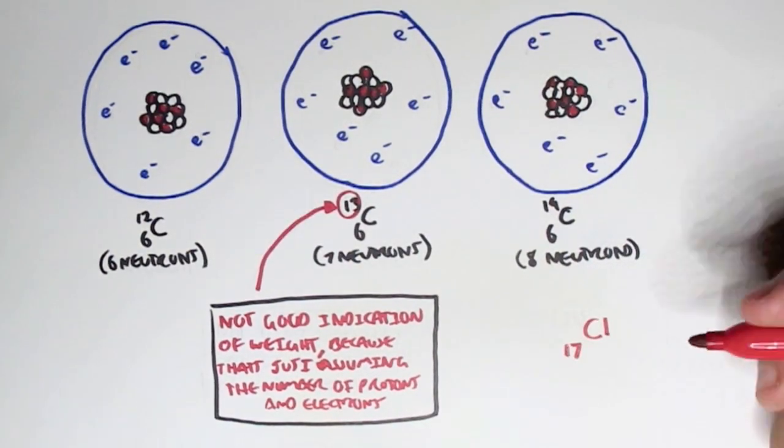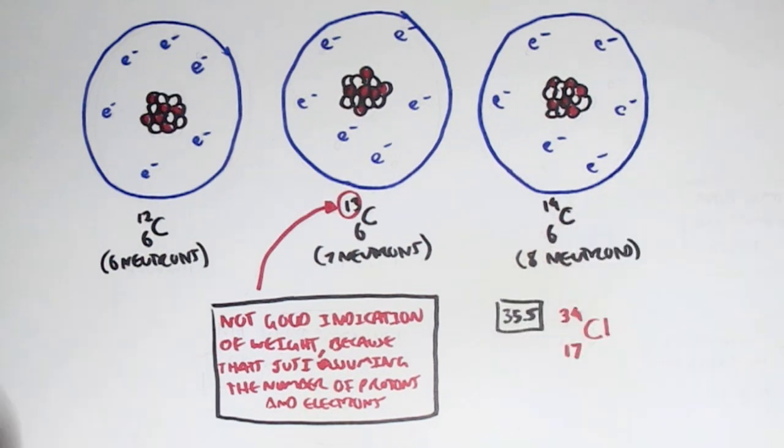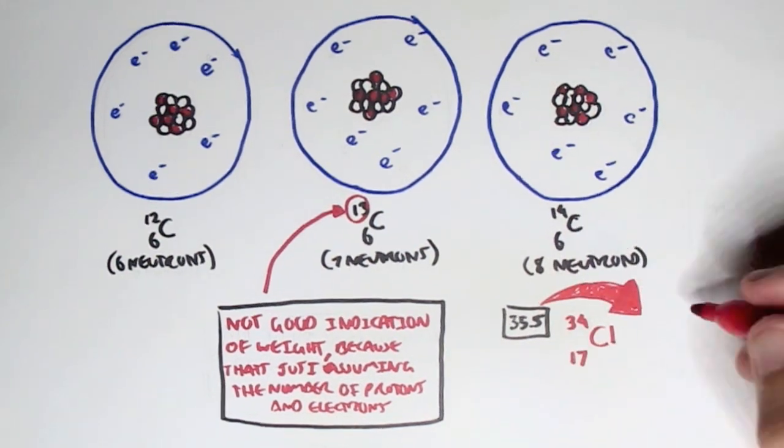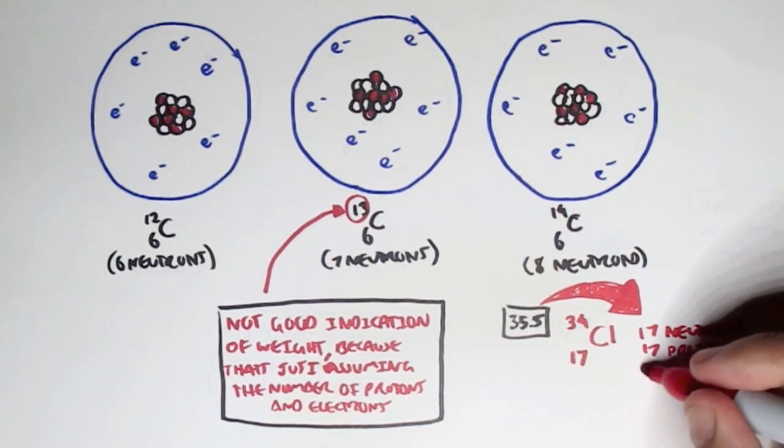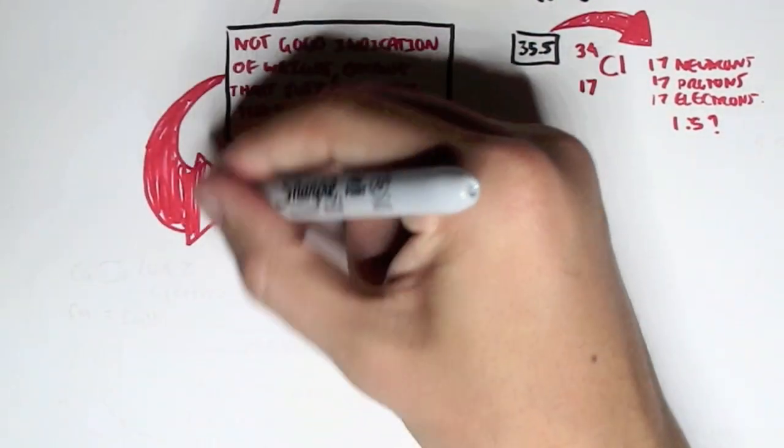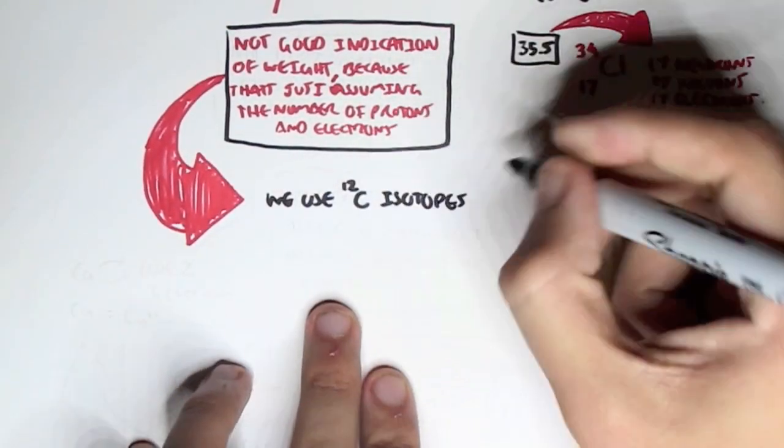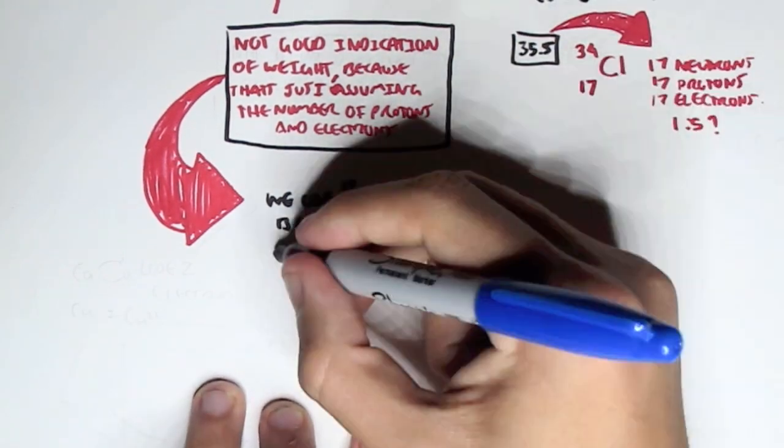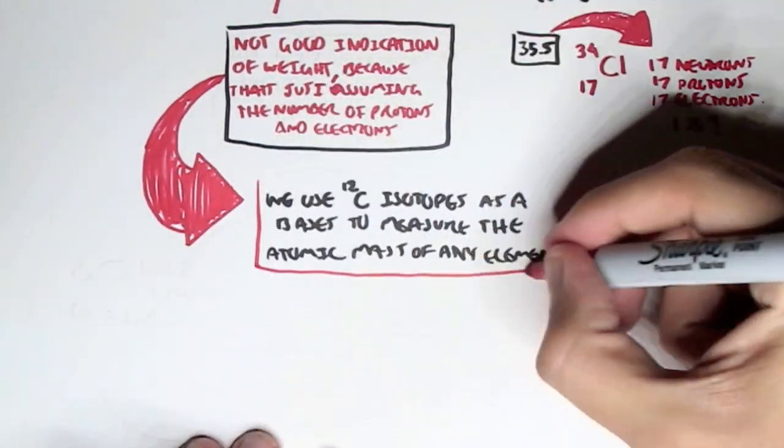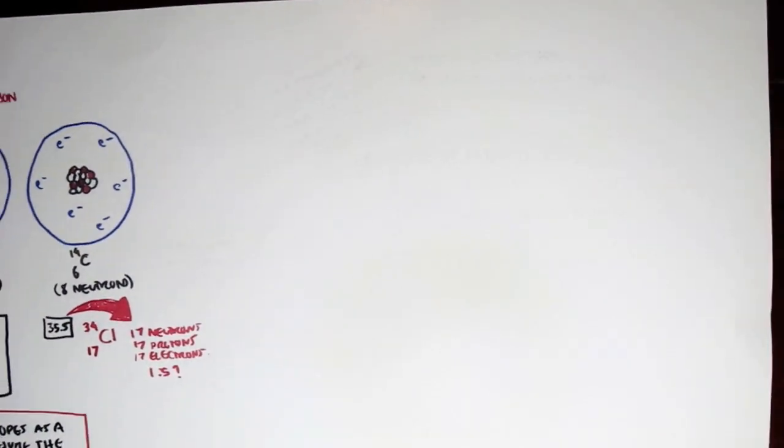Now, the number above this carbon, the mass number, is not a good indication of the weight because that's just assuming the number of protons and neutrons that particular isotope has. So if you look at chloride, which is number 17, its mass number is 34, but its actual mass is 35.5, which comes from 17 neutrons, 17 protons, and 17 electrons. But where does this 1.5 come from?